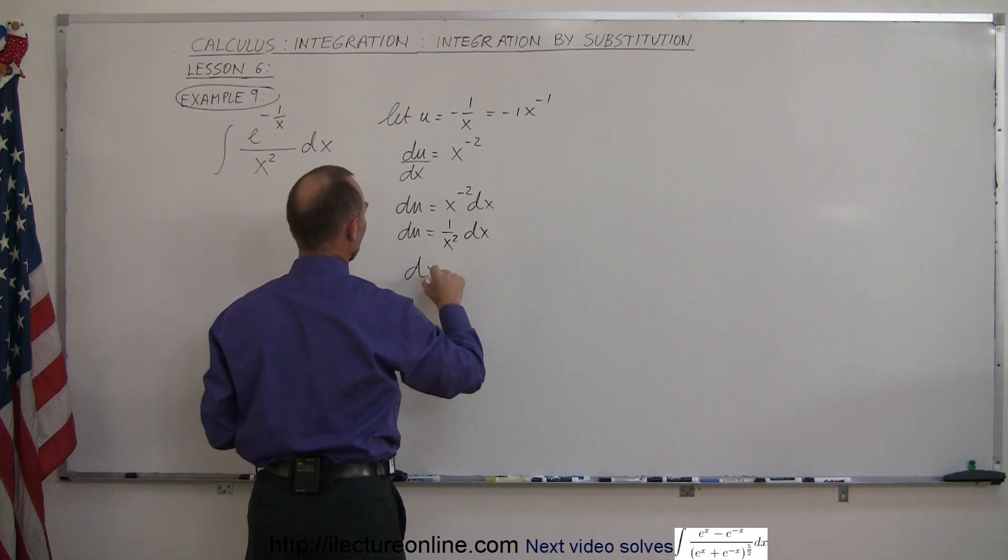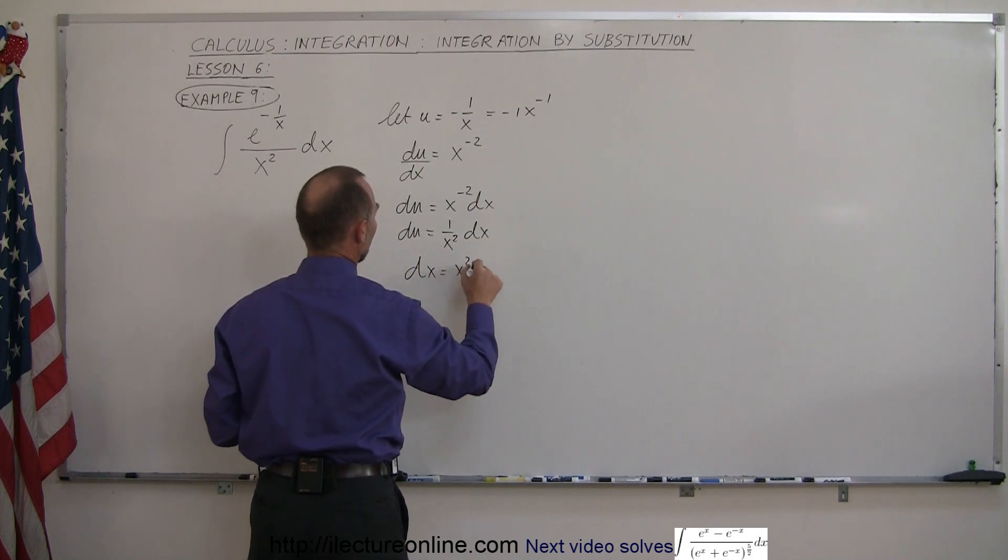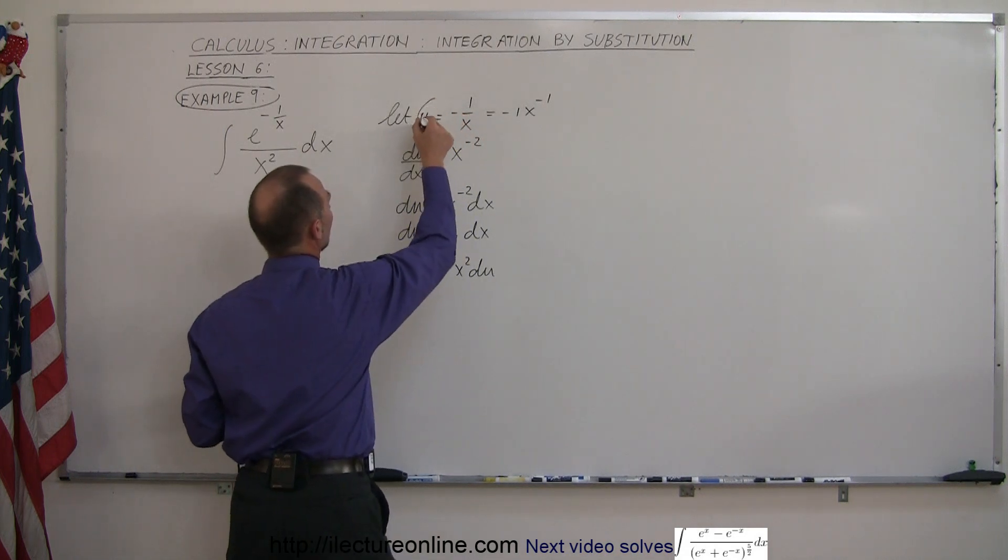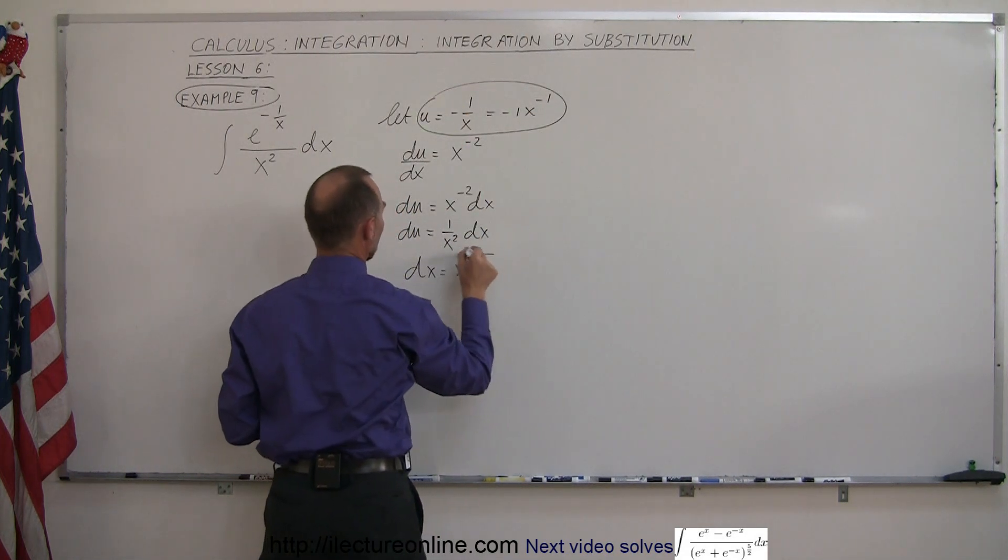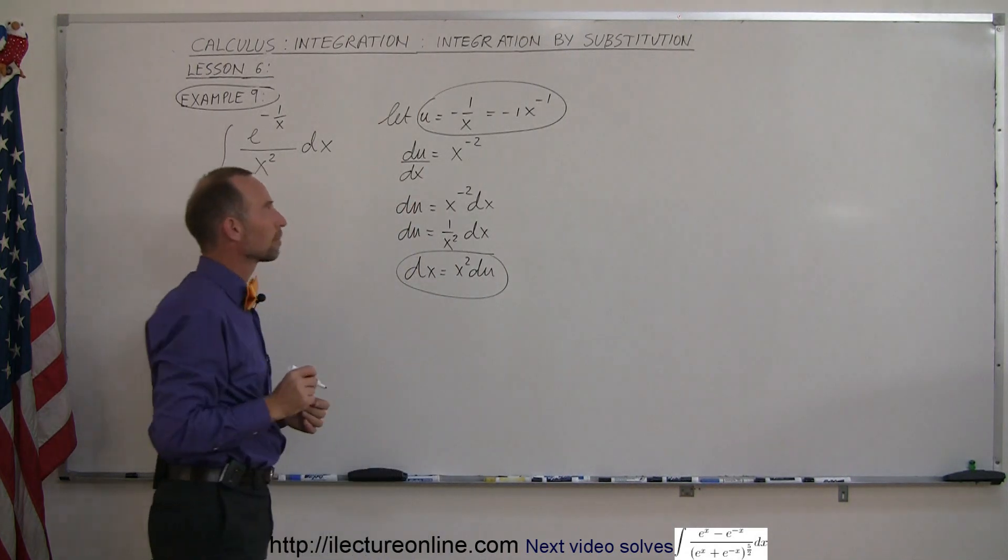And that means that dx can be written as x squared du. And then we're going to substitute this and this in the integral sign.